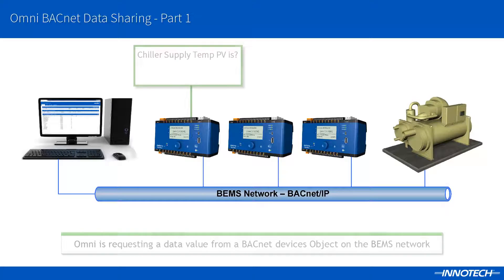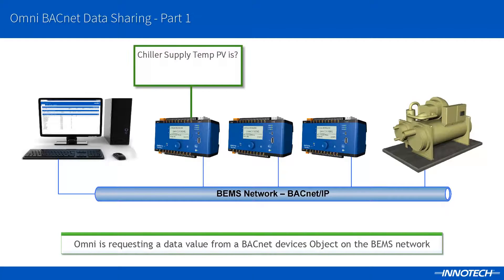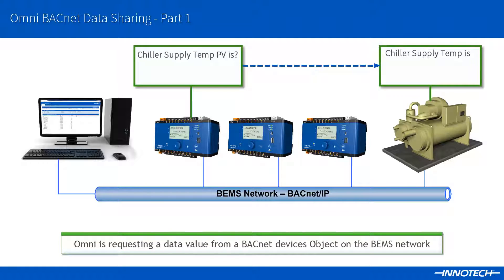BACnet data sharing essentially refers to a BACnet device requesting or writing data values to a BACnet object contained within another BACnet device on the network. For instance, in this example the OMNI controller is requesting the chiller's chilled water supply temperature value. The chiller, which has a BACnet over IP interface, responds back with the requested object's present value.